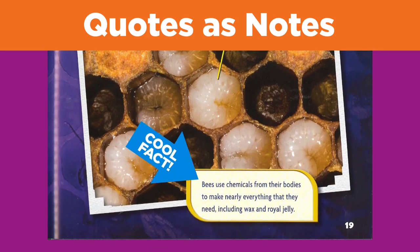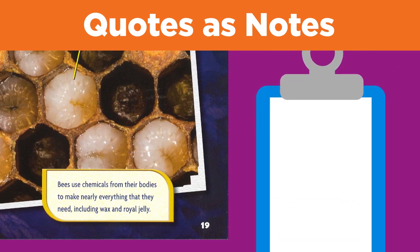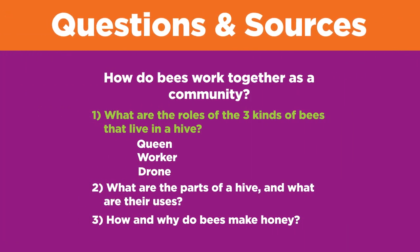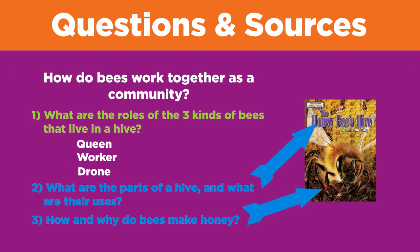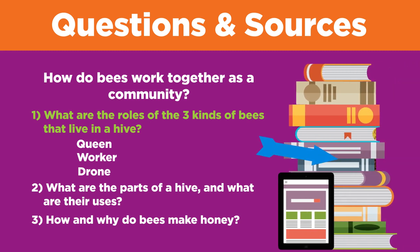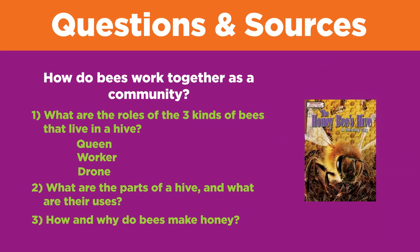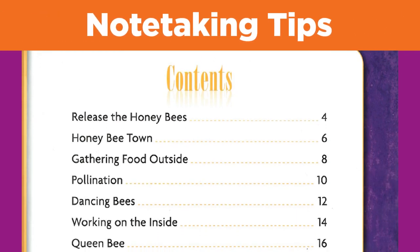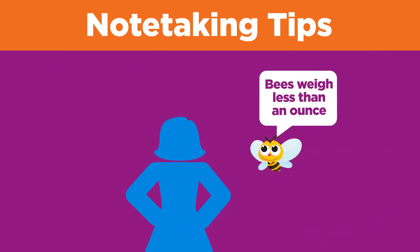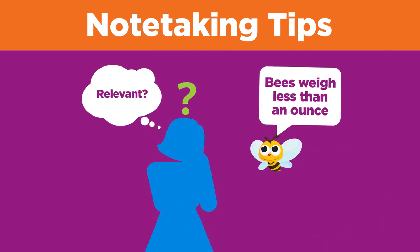For example, let's say that after you read this fact, you were wowed by how many bees make so much of what they need themselves. Since it is so interesting, it might make sense to quote it in your paper. Page 19: 'Bees use chemicals from their bodies to make nearly everything that they need, including wax and royal jelly.' After looking for answers to your first question in the first source, you have two choices: look for answers to your other questions in the same source, or continue looking for answers to your first question in other sources. It's up to you. You do not need to take notes on interesting information that does not answer any of your questions.